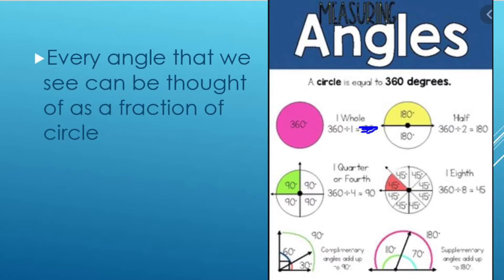So for example, in the bottom right, we see a 110 degree angle and a 70 degree angle. When those two angles are added together, we get half of a circle or 180 degrees or a straight line.